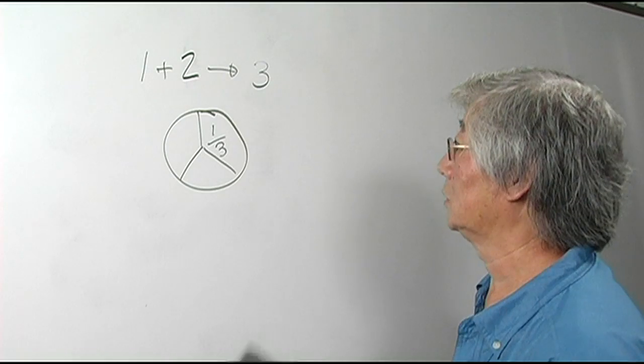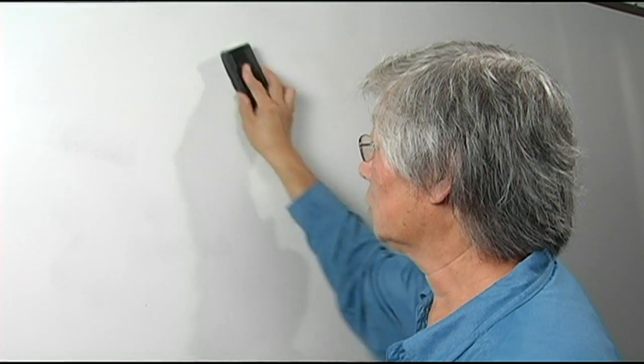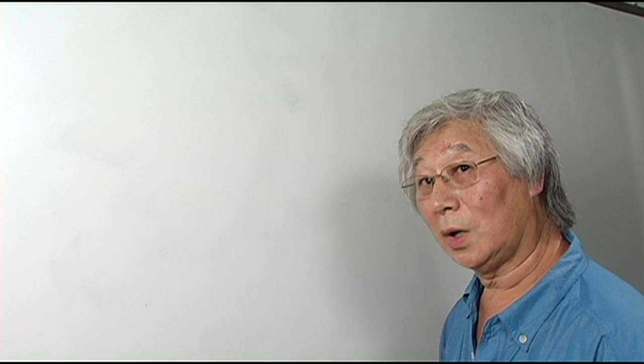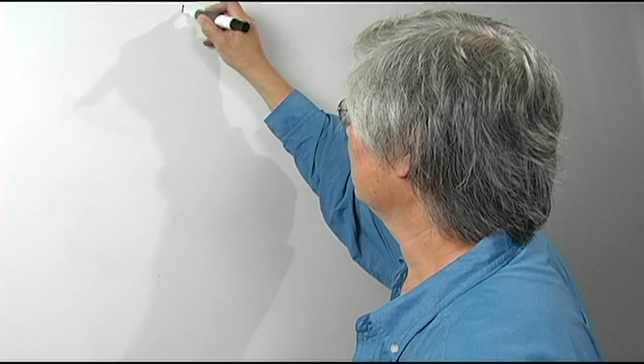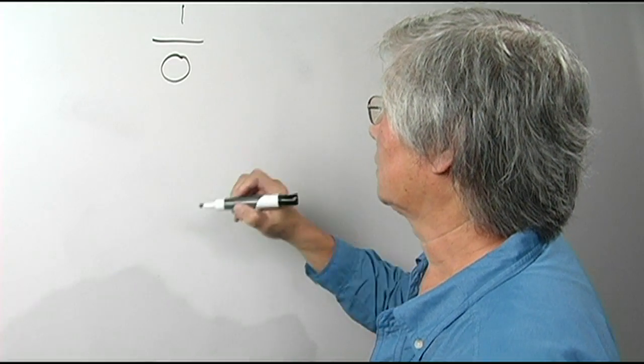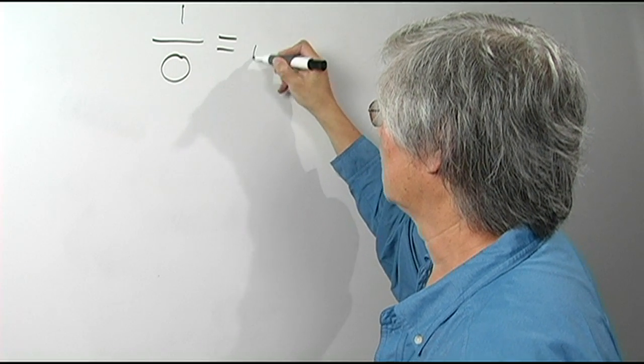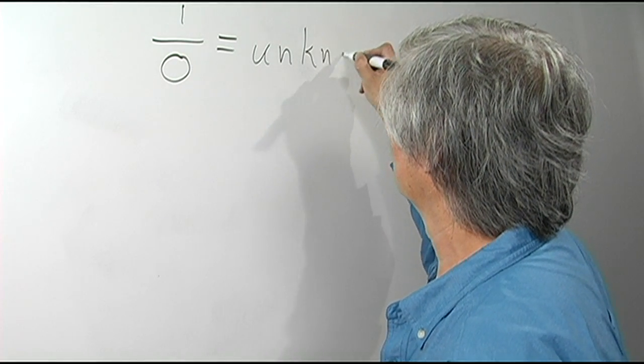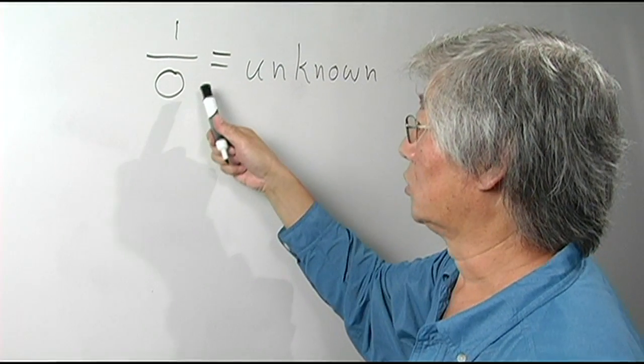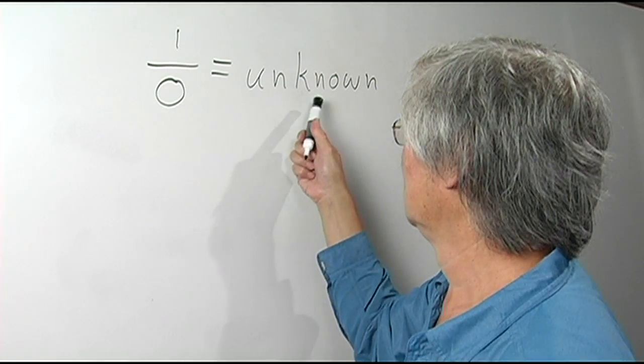Now here comes the big mystery. Suppose I'm not hungry. Suppose I don't want to eat any pizza and I don't want to share the pizza with anyone. So how large is the pizza being shared? That's a question that doesn't have any meaning. Dividing a pizza by zero is unknown. The reciprocal of zero, or dividing by zero, is unknown. We cannot describe that.